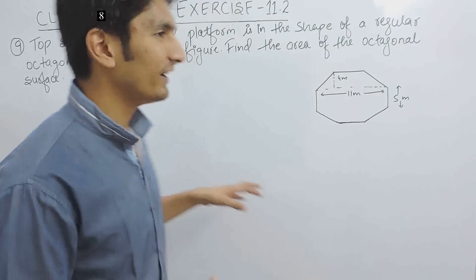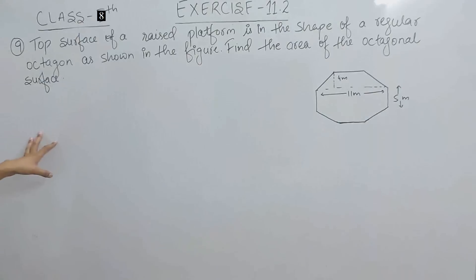Hello everyone, in this video we are going to solve question number 9 of exercise 11.2. The question says, top surface of a raised platform is in the shape of a regular octagon as shown in the figure, you have to find the area of the octagonal surface.